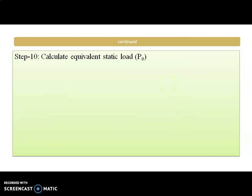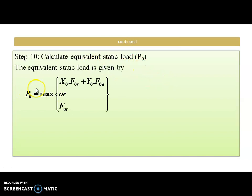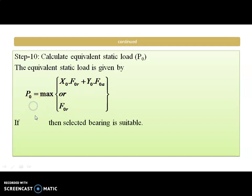The next step is to calculate the equivalent static load P0, given by the equation X0 × FR + Y0 × FA or FR — we take the maximum of the two. After that we check whether the static capacity C0 is greater than or equal to the equivalent static load. If so, the bearing is suitable.